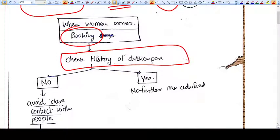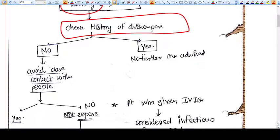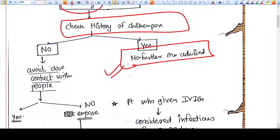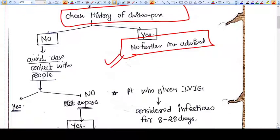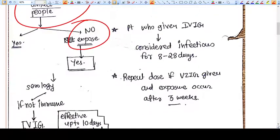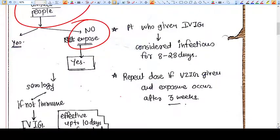You will ask the woman whether she had chickenpox in her childhood or not. If she says yes, then there is nothing to do further. If she says no, then you should tell her to avoid close contact with people who have chickenpox. If she still has an exposure to a person with chickenpox, then she becomes susceptible.